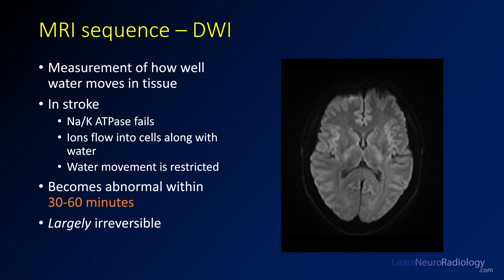After perfusion, we move to MRI. Diffusion is a measure of how well water is moving in tissue. In stroke, loss of oxygen causes failure of cell walls and sodium-potassium ATPases, leading to flow of ions into cells and increased intracellular water. When water is inside cells, its movement is restricted, so DWI gets brighter and ADC gets dark. This becomes abnormal very shortly after ischemia — probably within 30 to 60 minutes — and is largely irreversible. DWI is considered the gold standard for identifying tissue that will ultimately be dead.